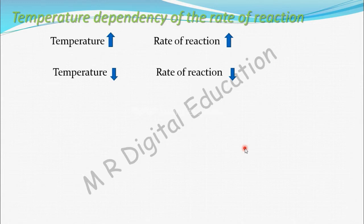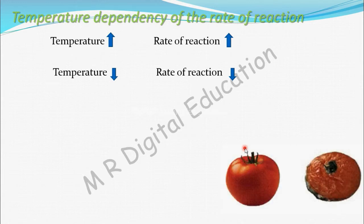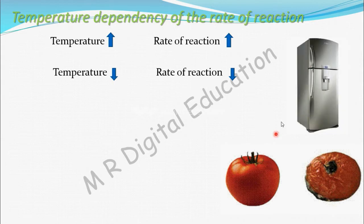Let's take an example: spoilage of tomato. At room temperature, it will get spoiled easily. If you keep it in the refrigerator, it will not get spoiled easily. Why? At room temperature, the temperature is high compared to the refrigerator, so the rate of reaction is high, and it will get spoiled easily.